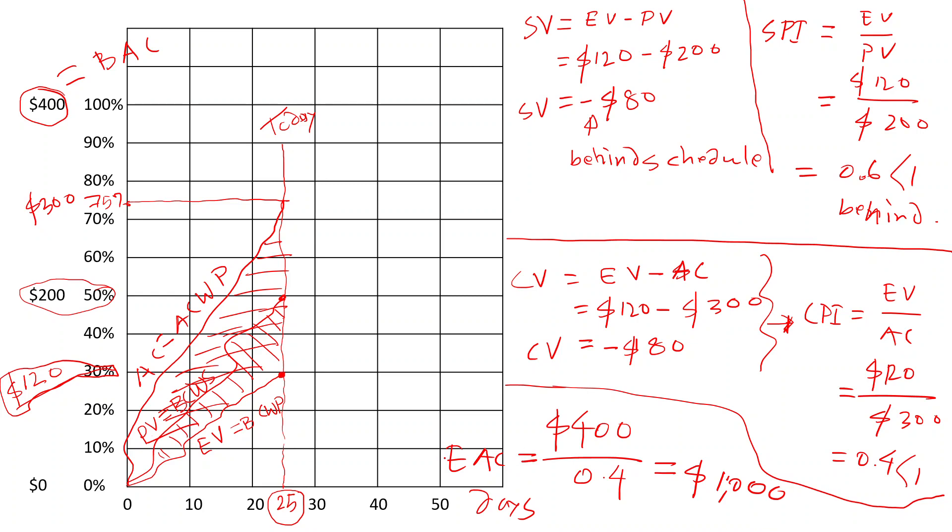If you try to develop another variance matrix, variance at the completion, you can simply do that BAC minus EAC, which is in this case negative $600, which is negative again. Negative means at the completion, it's going to be over-spent.